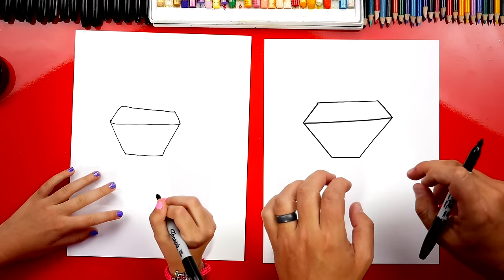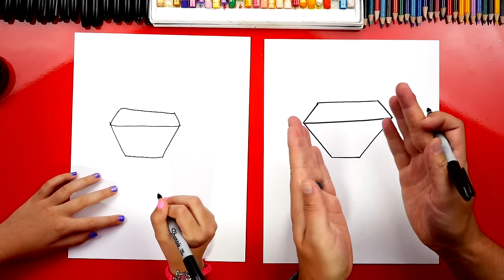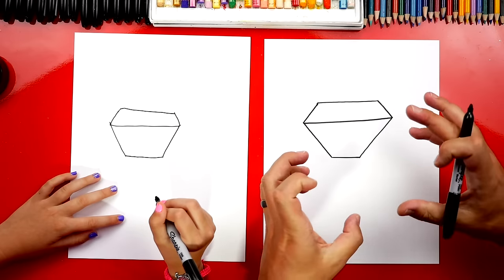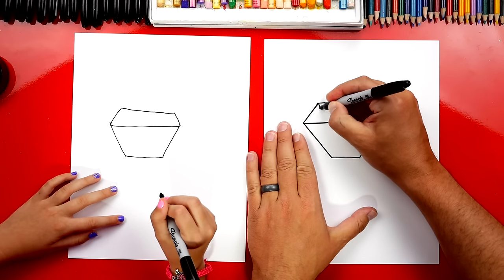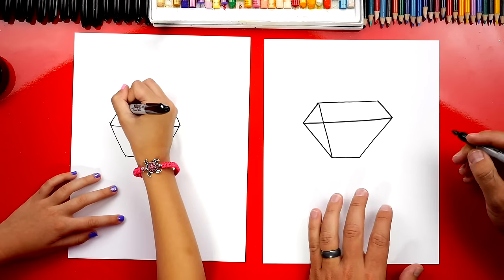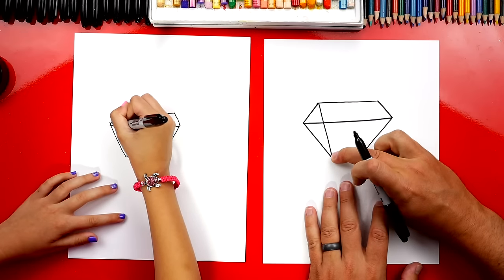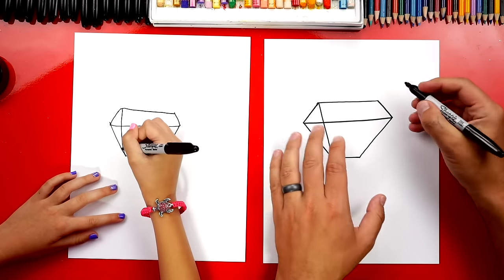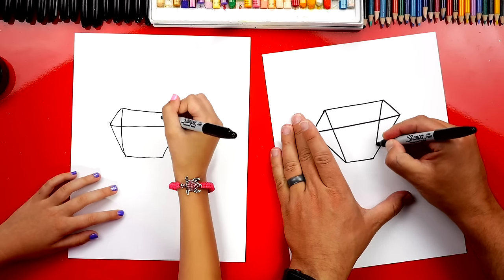Now we're going to draw all the facets on our diamond. That's all the different angles to make it look like it sparkles. We're going to draw a line that comes down from each corner and connects. So the top corner down to the bottom corner. And then we're going to do the same thing over here on this side.